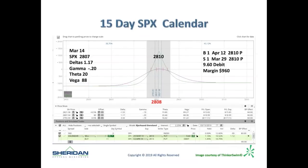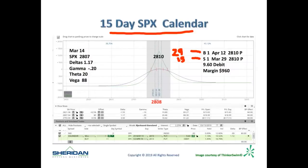Fred asks: do you do the 15-day butterfly or 15-day calendar every week, but not both? Generally, I've done the 15-day butterfly almost every week for the last couple of years. The problem with doing the calendar every week over the last four or five months is volatility has been too high. When the VIX gets too high, we don't trade calendars — you don't want to get caught holding the bag as volatility goes down. Right now with VIX in the 12s, you can definitely do both calendars and butterflies.